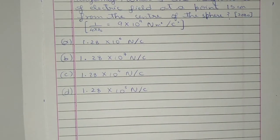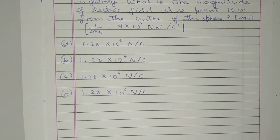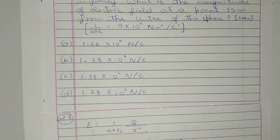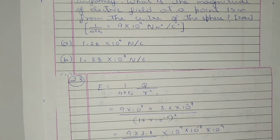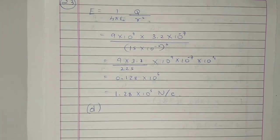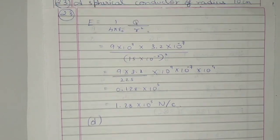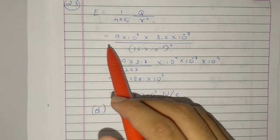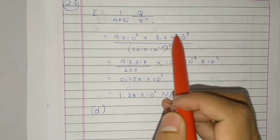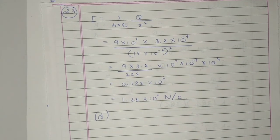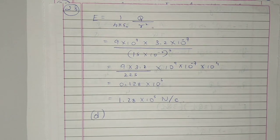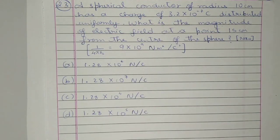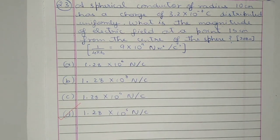Question 23: A spherical conductor of radius 10 cm has a charge of 3.2 × 10⁻⁷ coulomb distributed uniformly. What is the magnitude of the electric field at a point 15 cm from the center? K = 9 × 10⁹ Nm²/C². Electric field outside the sphere: E = KQ/R² = (9 × 10⁹ × 3.2 × 10⁻⁷) / (15 × 10⁻² )² = 1.28 × 10⁵ N/C. It is option D. Like, subscribe and share for more. Thank you.